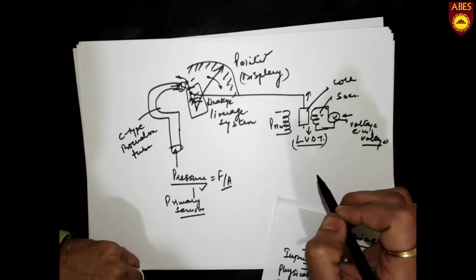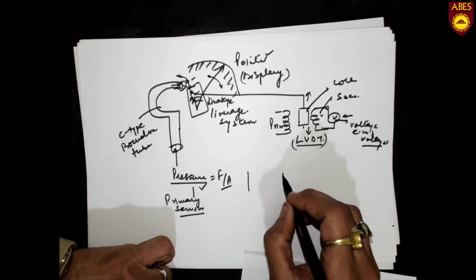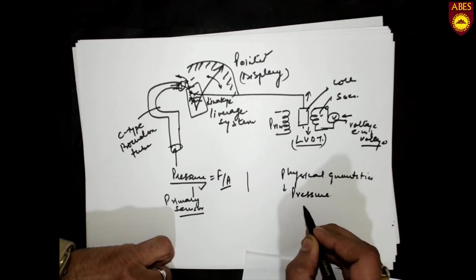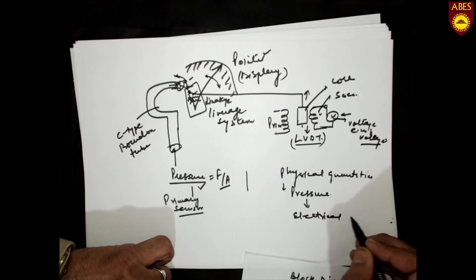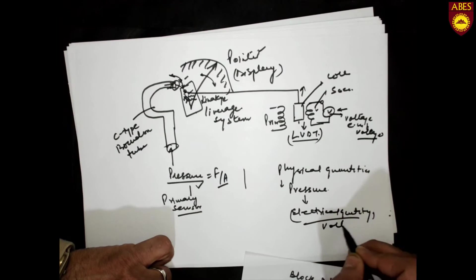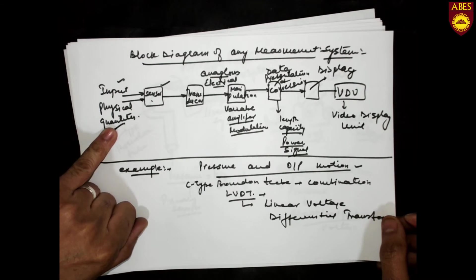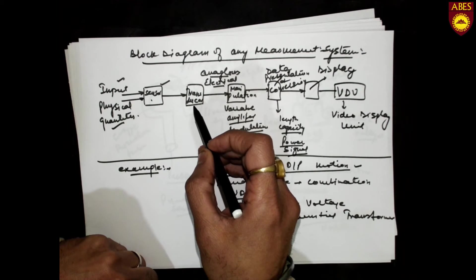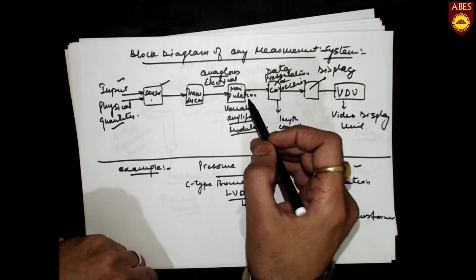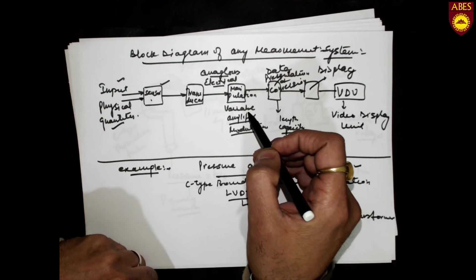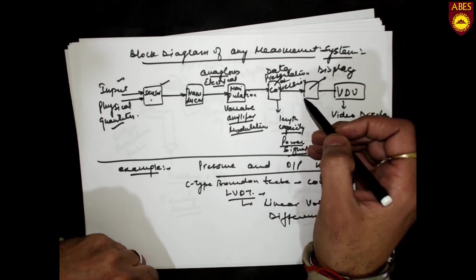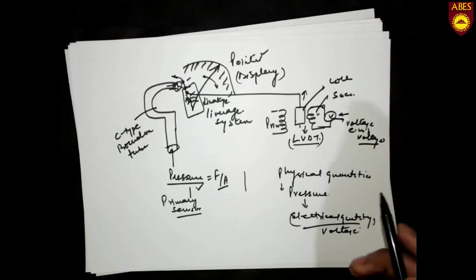The voltage is detected by the voltmeter. Hence, the physical quantity — which was originally pressure — is converted into an analogous electrical quantity, that is voltage. The block diagram is therefore justified: the physical parameter (pressure) is detected by the C-type Bourdon tube as the sensor, the LVDT converts the variable value, and the manipulation variable involves mechanical linkage as well as mutual induction. Data presentation is via a pointer or a seven-segment display. This block diagram is identified and justified in this example.